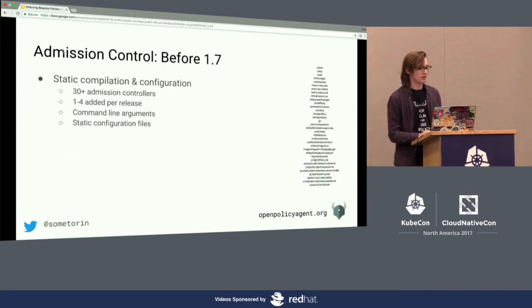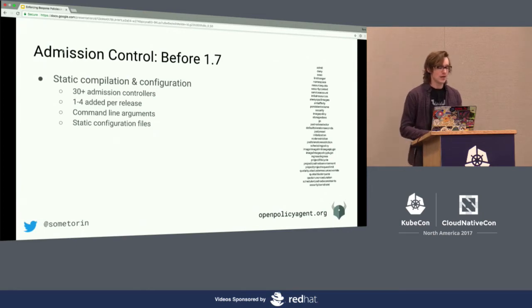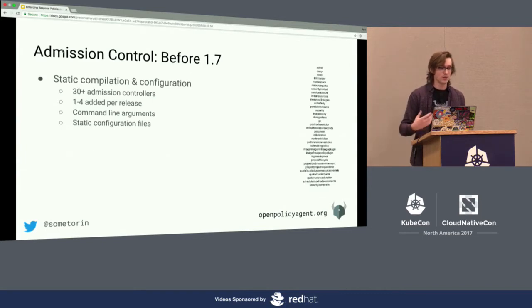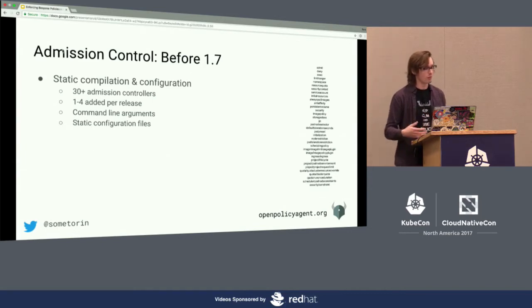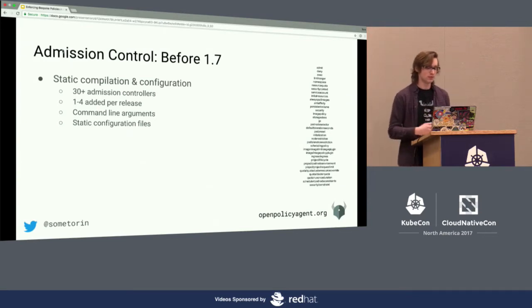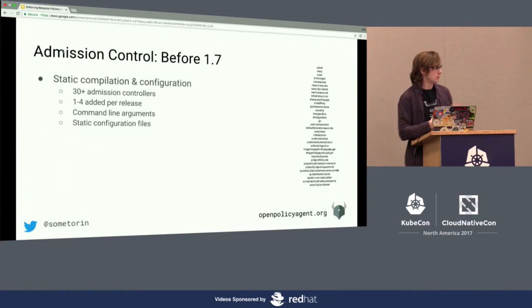Before 1.7, this was the state of things: you had to basically statically compile and configure your admission controllers inside of the API server. Over time, more and more admission controllers got added to Kubernetes — you'd see a handful added in each release. Some of them are very simple, some are more complicated, and some are very specific to certain use cases. This is a list of all the different ones you see in the codebases in Kube and OpenShift today.